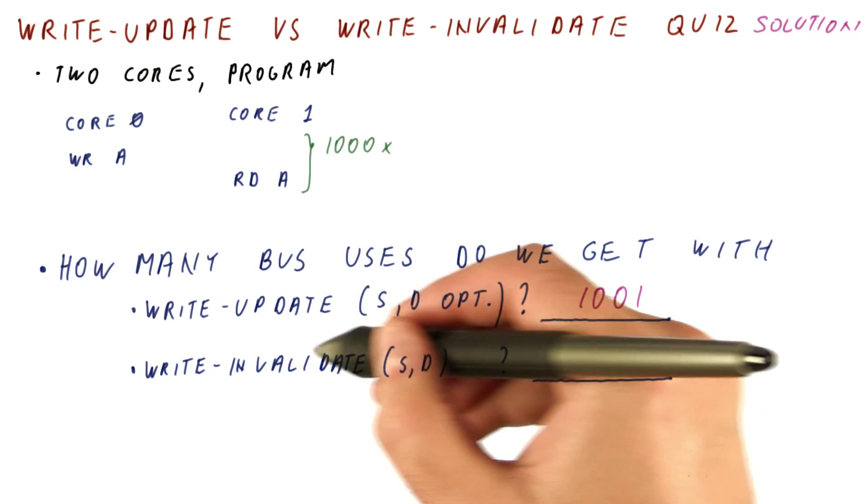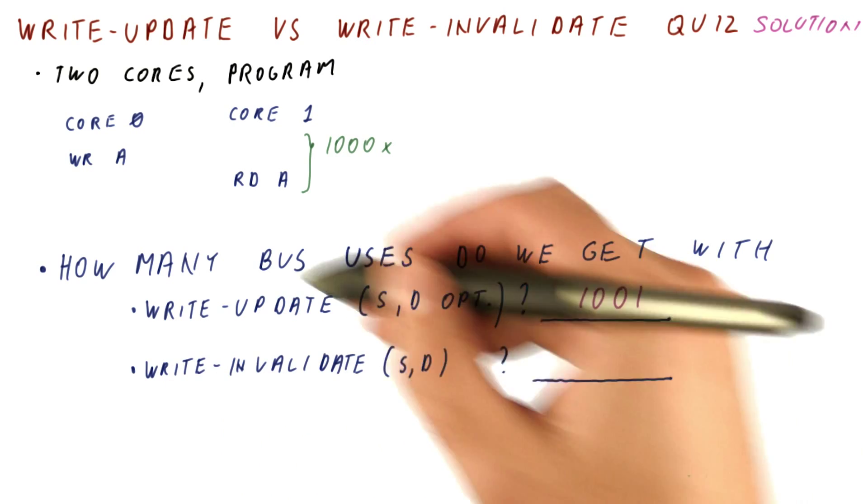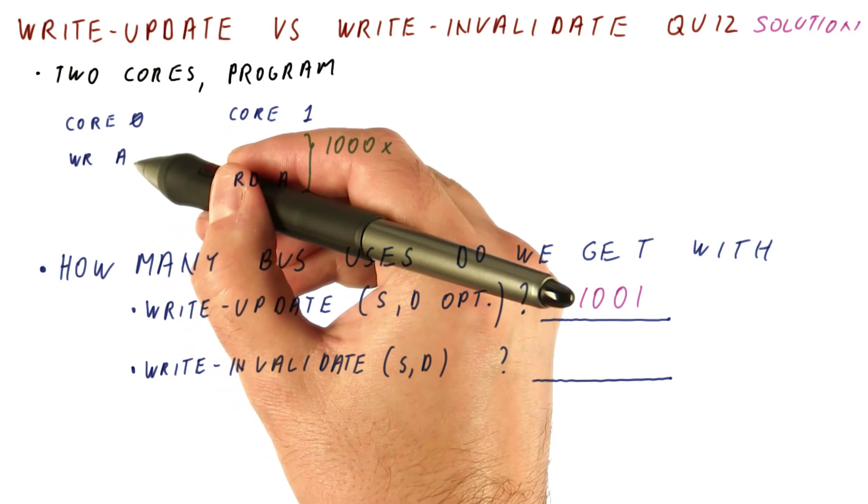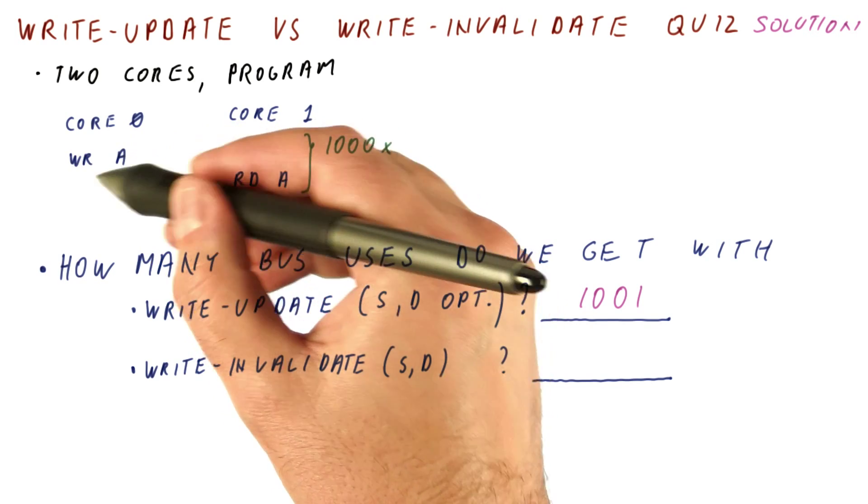In a write-invalidate protocol, let's see what happens. Core zero writes, this is a miss. We send something to the bus, and now we get the only copy of this data.